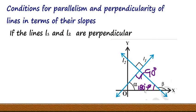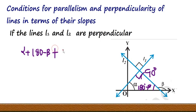We have the angles of a triangle: one angle is 180 - beta, another is alpha, and the third is 90 degrees. Since the sum of angles of a triangle is 180 degrees, we have: alpha + (180 - beta) + 90 = 180. The 180s cancel, giving us beta = 90 + alpha.